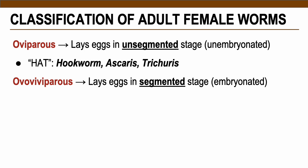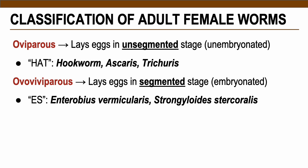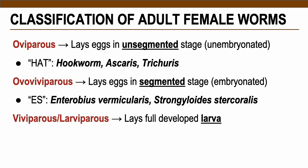Ovoviviparous females lay their eggs already segmented — developed eggs. Examples are Enterobius vermicularis and Strongyloides stercoralis. These two parasites lay their developed eggs outside or even inside the host, causing auto-infection, meaning their life cycle may continue without the parasite leaving the host. Viviparous or larviparous females lay fully developed larvae instead of eggs — examples are tissue nematodes, discussed at the next meeting.